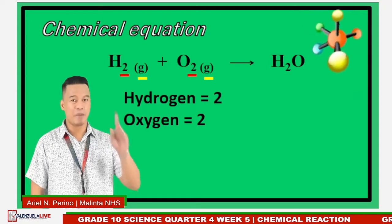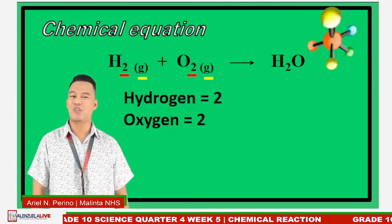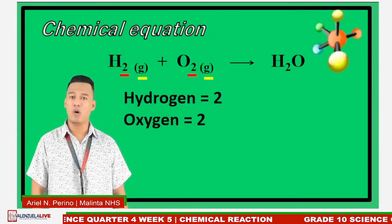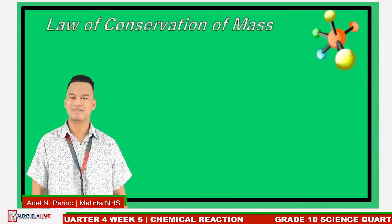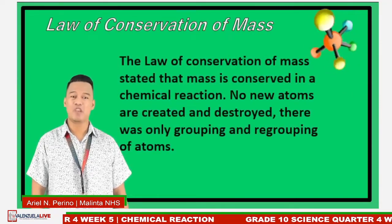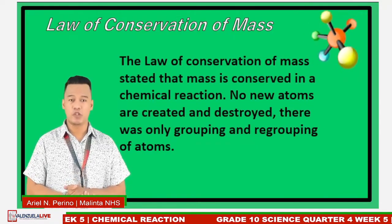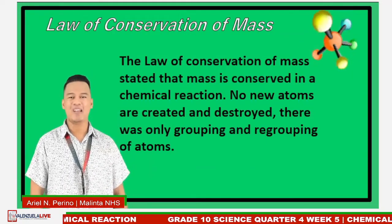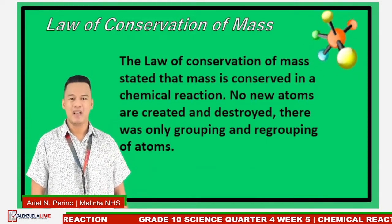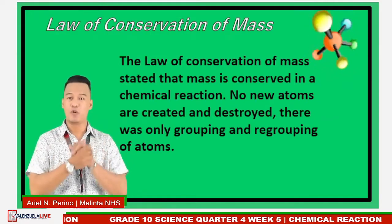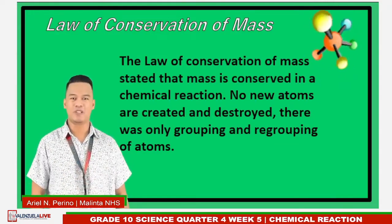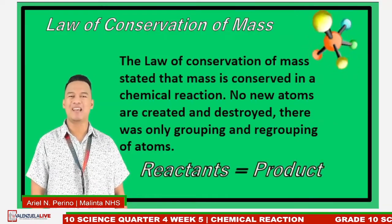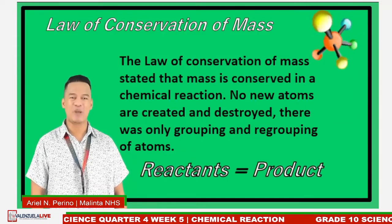Always remember: a chemical reaction follows the law of conservation of mass. This law states that mass is conserved in a chemical reaction — no new atoms are created or destroyed. There is only grouping and regrouping of atoms. So, in a chemical reaction, the total mass of the reactants is always equal to the mass of the products.